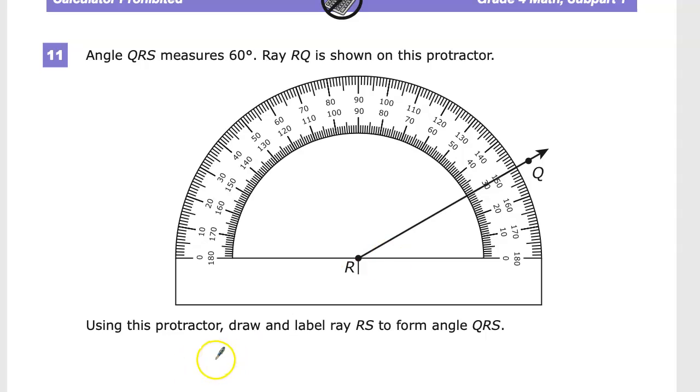So I'm going to have to take something like this. Of course, in the real world, a ray would be a straight line, and that's still not very close. I need to do something with that to form angle QRS. And remember, the angle has to be 60 degrees.